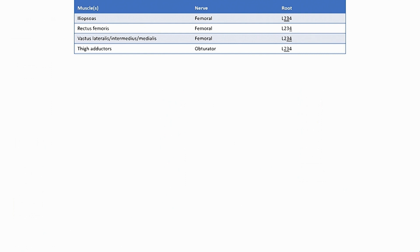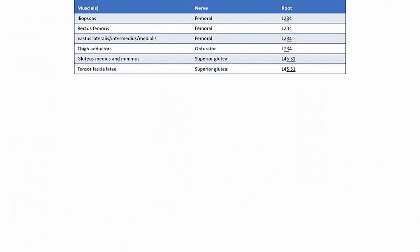The thigh adductors are innervated by the obturator nerve, L2, 3, and 4 nerve roots, primarily L2 and 3. The gluteus medius and minimus muscles are innervated by the superior gluteal nerve, supplied by L4, 5, and S1, primarily L5 and S1. The tensor fasciae latae is also supplied by the superior gluteal nerve, L4, 5, S1, primarily L5 and S1. Gluteus maximus is supplied by the inferior gluteal nerve, L5, S1, and S2, primarily L5 and S1.